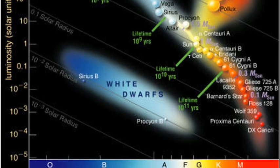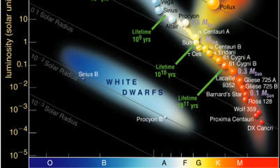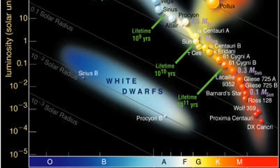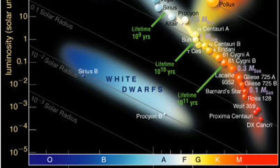It is a main sequence star and is located in the middle of the diagram. The sun is one solar diameter and has one solar mass. Other stars can be measured against the sun in terms of size, mass, and brightness.